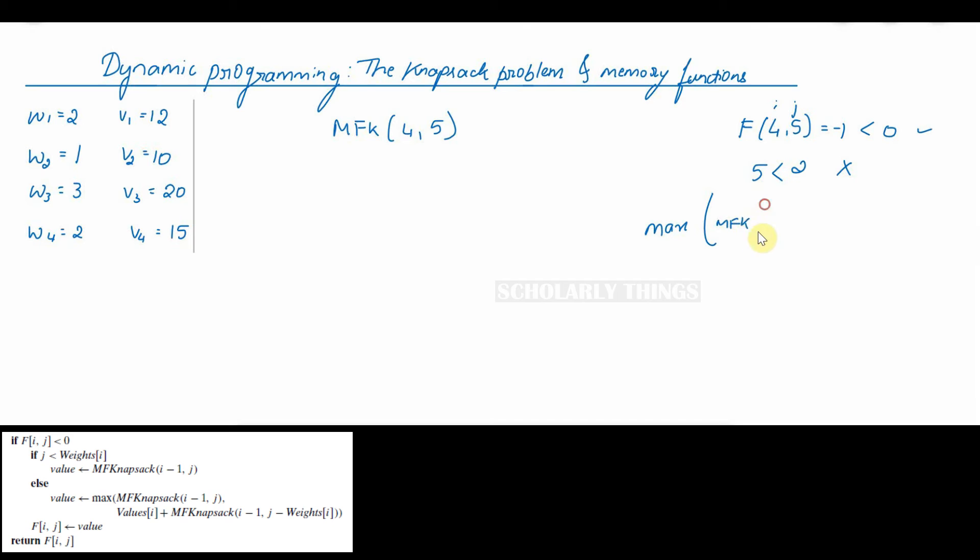Value will be maximum of mfk of 3 comma 5, i minus 1 is 3, j is 5 comma, value of i is 15 plus mfk of i minus 1, 3 comma j minus weight of i. That is 5 minus weight of i is 2. It will be max of mfk of 3 comma 5 comma 15 plus mfk of 3 comma 3. So we will be taking the maximum value among these two. Now let's take mfk of 3 comma 5. The algorithm is recursively called.